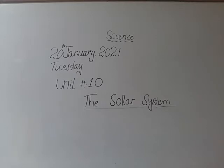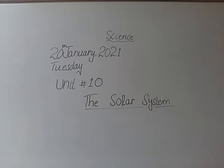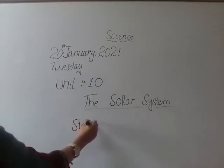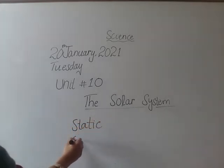The chapter that we are going to start today is about the solar system. We have done chapter number 9, which was related to electricity and magnetism. Before we start today's new chapter, let us revise what we have learned in our previous lesson. Jeannat, what are the two types of electricity we discussed? Very good — one was static electricity and the other was current electricity.